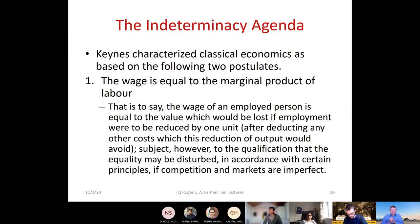Let's go back to Keynes's attack on what he called classical economics and the data he found inconsistent with it. He characterized classical economics with two postulates. The first is that the wage is equal to the marginal product of labor — that is to say, the wage of an employed person is equal to the value which would be lost if employment were reduced by one unit, after deducting any other costs which this reduction of output would avoid, subject to qualifications if competition and markets are imperfect.